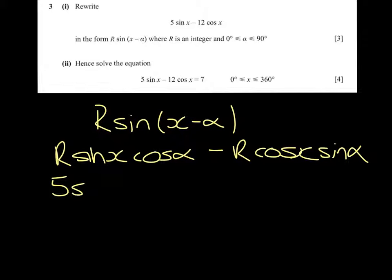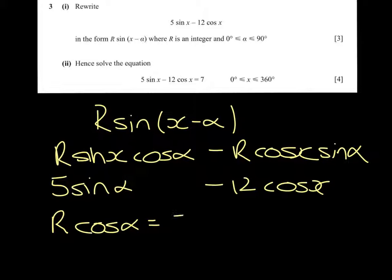Underneath we have 5 sin x minus 12 cos x. So equating coefficients, R cos α equals 5 and R sin α equals 12.